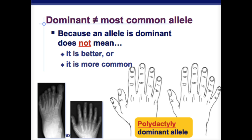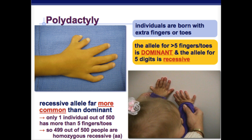Not to get confused — dominant does not always mean the common allele. For example, polydactyly is a dominant allele, meaning you have extra fingers. We normally have five, but in this picture you can see there's an extra digit, and that's the dominant trait. The majority of us have the recessive trait. Polydactyly is when an individual is born with an extra finger or toe. The allele for greater than five fingers is dominant, and only about 1 in 500 people have more than five fingers.